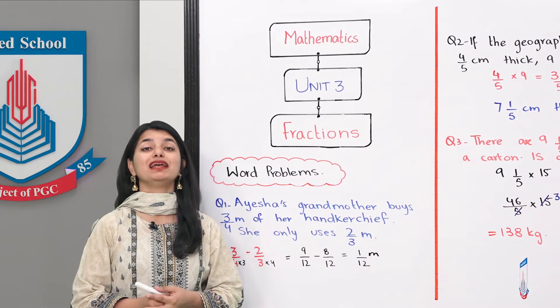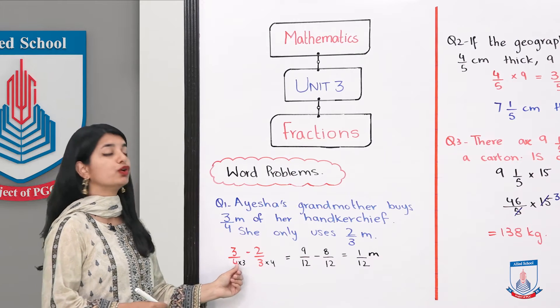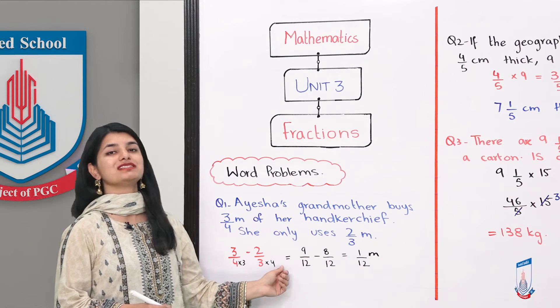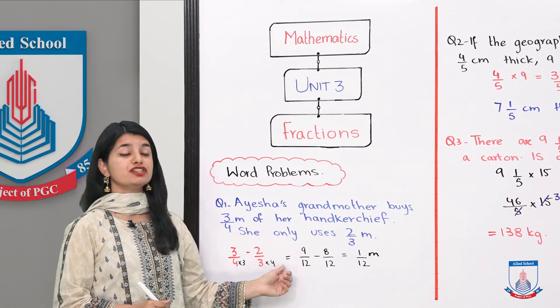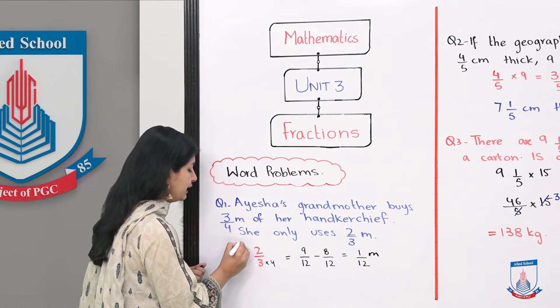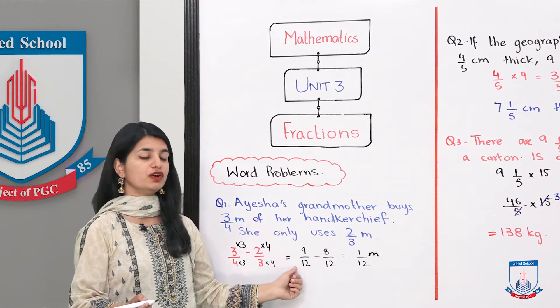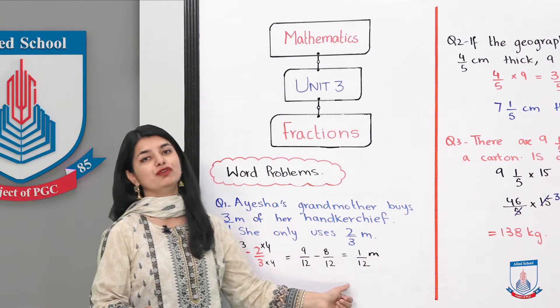The LCM will be 12. We will make both denominators 12. We will multiply 3 and 4. When you multiply the denominator, the numerator also needs to be multiplied. So we have 3 into 3, 9 over 12 and 2 into 4, 8 over 12.